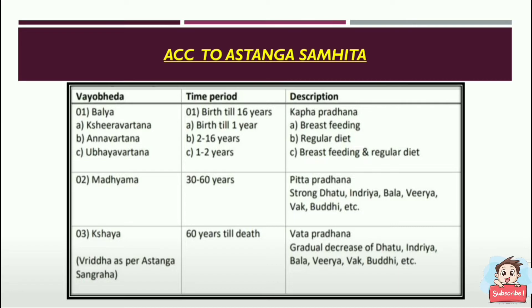The second classification is from 30 to 60 years — Pitta Pradhana — during which strong Dhatu, Indriya, and Bala are maintained; the human is at their strongest and all systems in the body are fully developed. It is called Madhyama. The third is from 60 years till death, called Kasha, where gradual decrease of Dhatu, Indriya, and all developed strengths and activities begins.